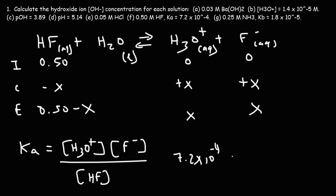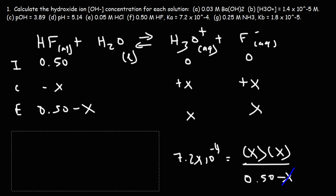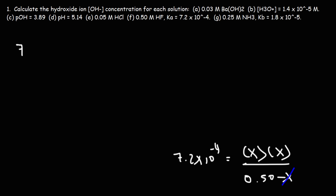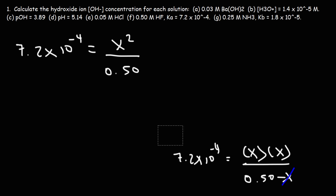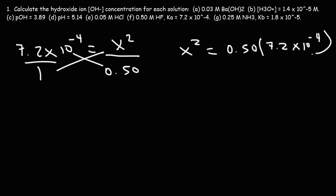Ka is 7.2 × 10⁻⁴. We have X times X in the numerator and HF is 0.50 minus X in the denominator. Because Ka is small, X is negligible compared to 0.50, so we eliminate the X in the denominator to avoid the quadratic formula. Cross-multiplying gives X² = 0.50 × Ka.